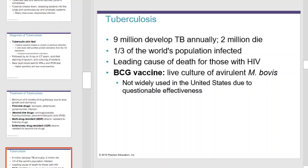Tuberculosis develops in 9 million people annually; 2 million die. One-third of the world's population is infected with tuberculosis. It's the leading cause of death for those with HIV. The BCG vaccine, a live culture of avirulent Mycobacterium bovis, is used to treat it. However, it is not widely used in the United States due to its questionable effectiveness.